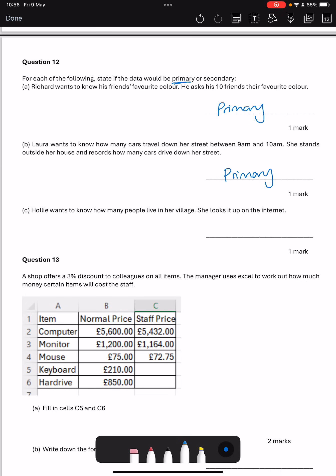Holly wants to know how many people live in her village. She looks it up on the internet. Because we do not know if the information that she's looking up has been collected by somebody for the same reason she wants it for, this is going to be secondary.